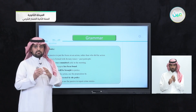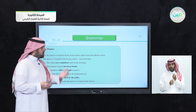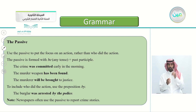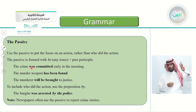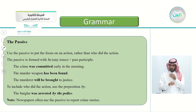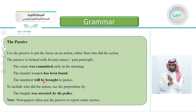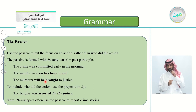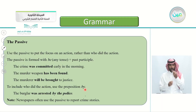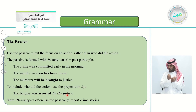How do you form a passive? We use 'be' with any tense — present, past, or future — then add the past participle. Here are some examples: 'The crime was committed' — 'was' is verb to be in the past, 'committed' is the past participle — 'early in the morning.' 'The murderer's weapon has been found.' 'The murderer will be brought to justice.' To include the doer of the action, just add the word 'by,' then put the name. For example: 'The burglar was arrested by the police.'